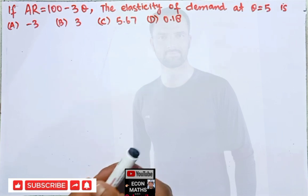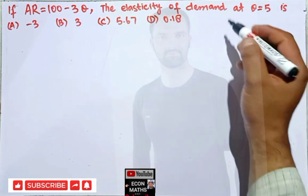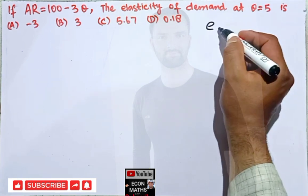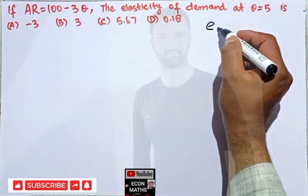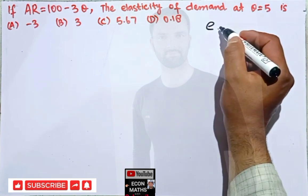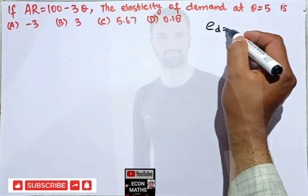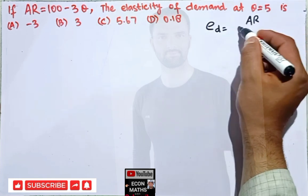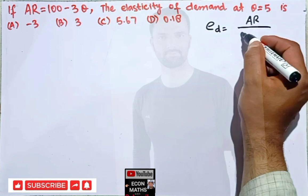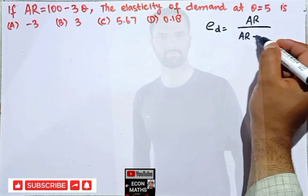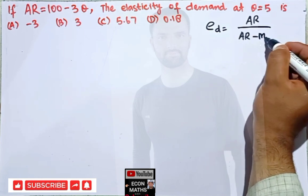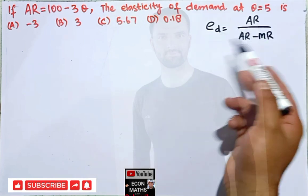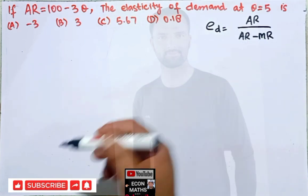The first formula for finding the elasticity of demand is: elasticity equals average revenue divided by (average revenue minus marginal revenue). This is one method of finding the elasticity of demand.